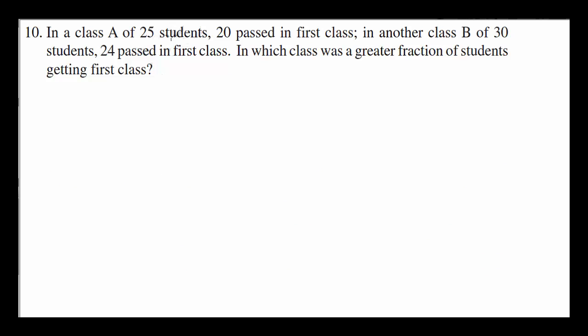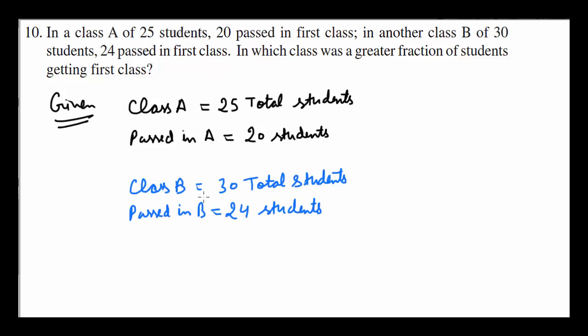Last question. In a class A, 25 students, 20 passed out of them. And for the B, 24 passed out of 30. Which is greater fraction of students passed? Given is class A, 25 students. Now out of them passed only 20 students. That is 5 failed. Class B is 30 students and past 24 and 6 failed.